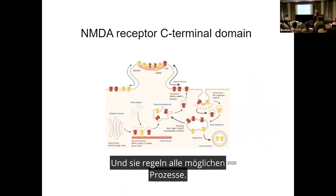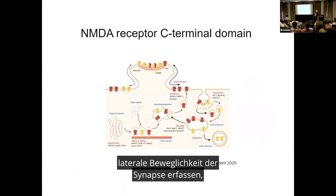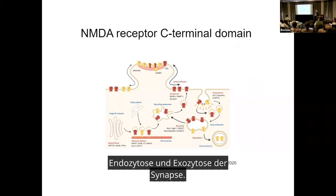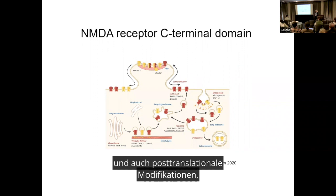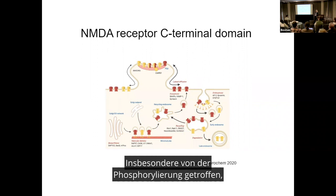The C-terminal domains regulate all sorts of processes: trafficking to the cell surface, lateral mobility, capture at synapses, endocytosis, and exocytosis. The C-terminal domain has protein-protein interaction sites and also post-translational modification residues that are hit by phosphorylation in particular — that is what we study.